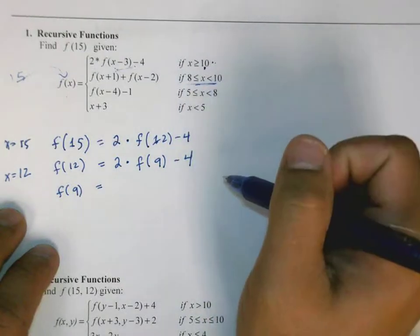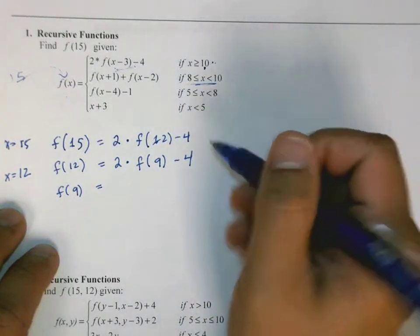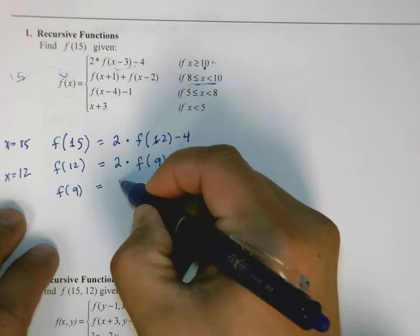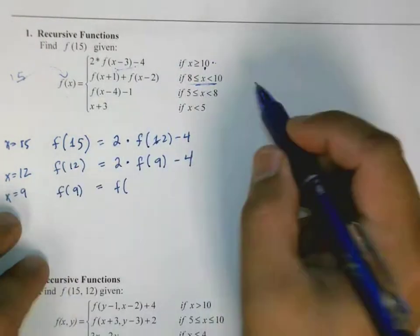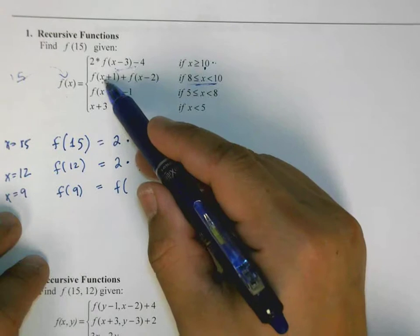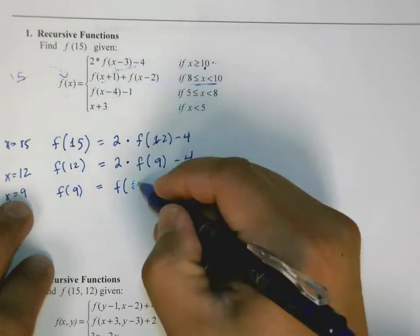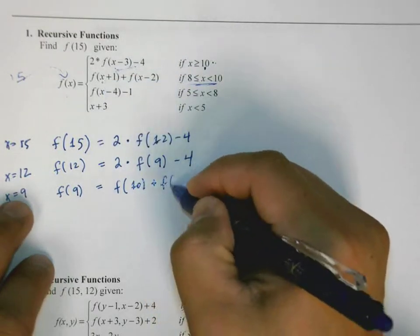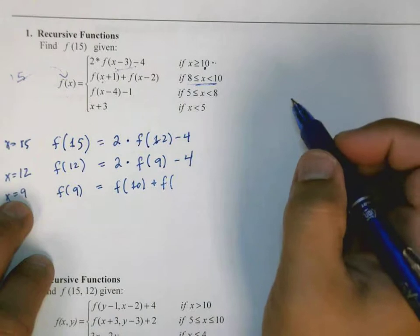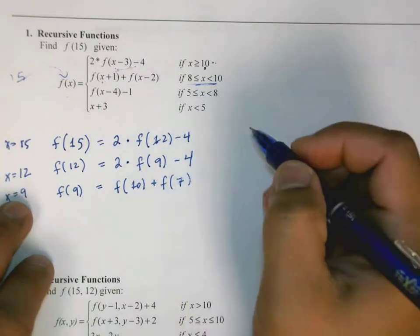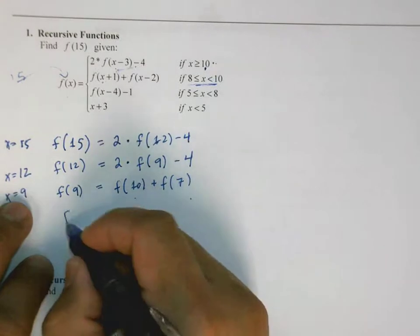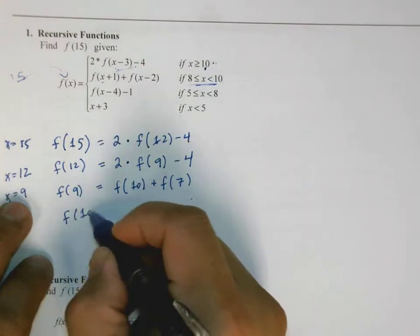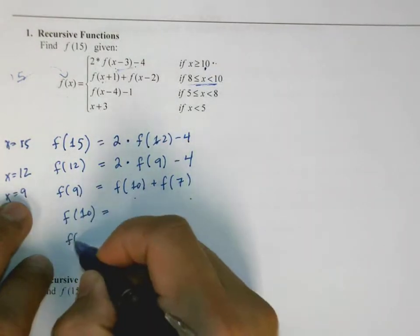So x is between 8 and 10, so we're going to return f of, right now x is equal to 9, f of x plus 1, or f of 10, plus f of x minus 2, or f of 7.